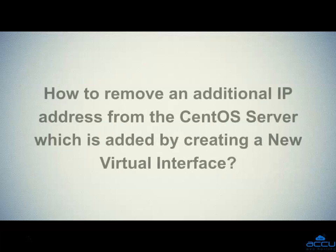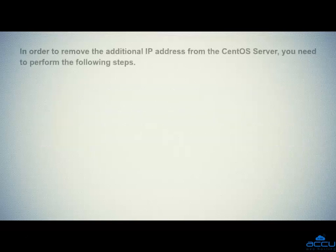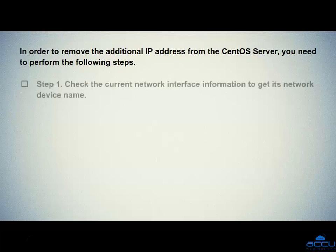First, we will see how to remove an additional IP address from the CentOS server which is added by creating a new virtual interface. In order to remove it, you need to perform the following steps. Step 1: Check the current network interface information to get its network device name.